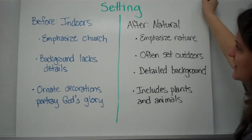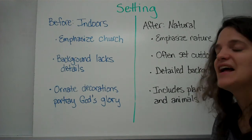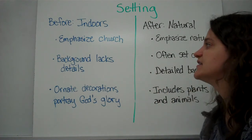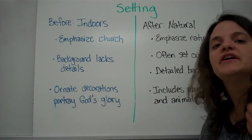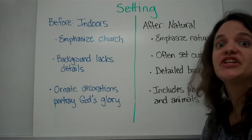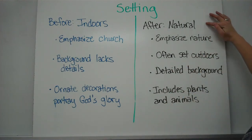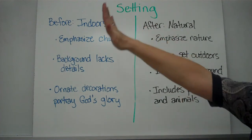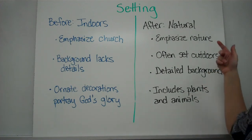Last but not least, let's talk about setting in Renaissance art. Before the Renaissance, the setting was usually indoors — a lot of times emphasizing church, and many paintings were even set inside churches. The background often lacked details, or if it had details, it was probably ornate decorations to show how glorious God was: decorations in the church, holy symbols, and a lot of gold. After the Renaissance, the settings became more natural. They started to emphasize nature, and a lot of paintings were even set outdoors. The backgrounds became very detailed, showing what's going on in the distance, and many paintings include plants and animals to emphasize the natural world.